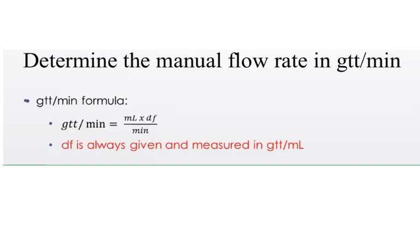It could be 15 drops per milliliter. It could be 60 drops per milliliter. It refers to the size of the tubing, and you will always be told. And then for my formula, the bottom number is your minutes.